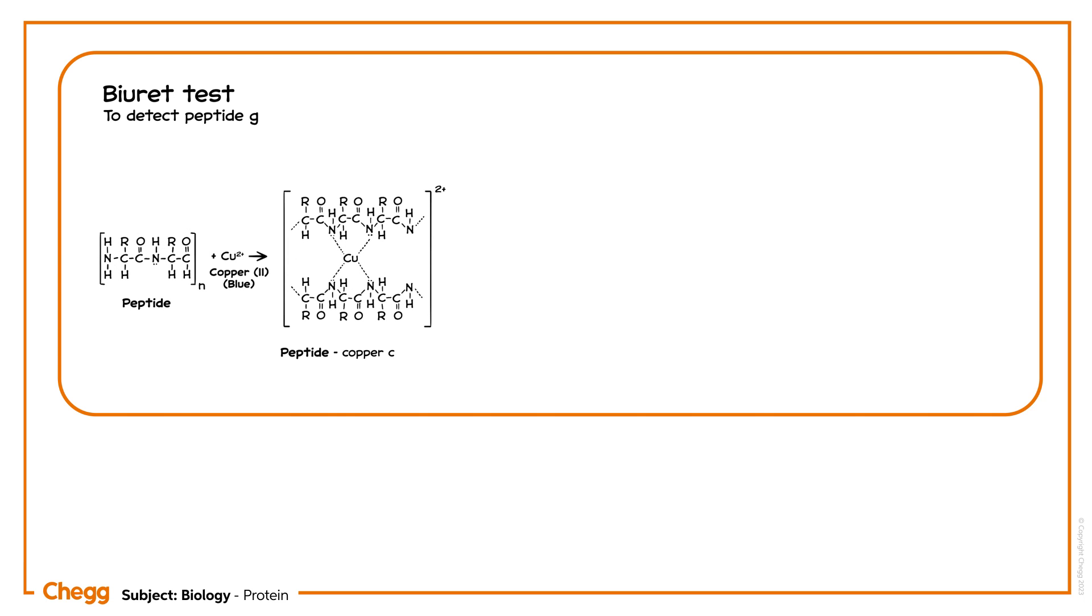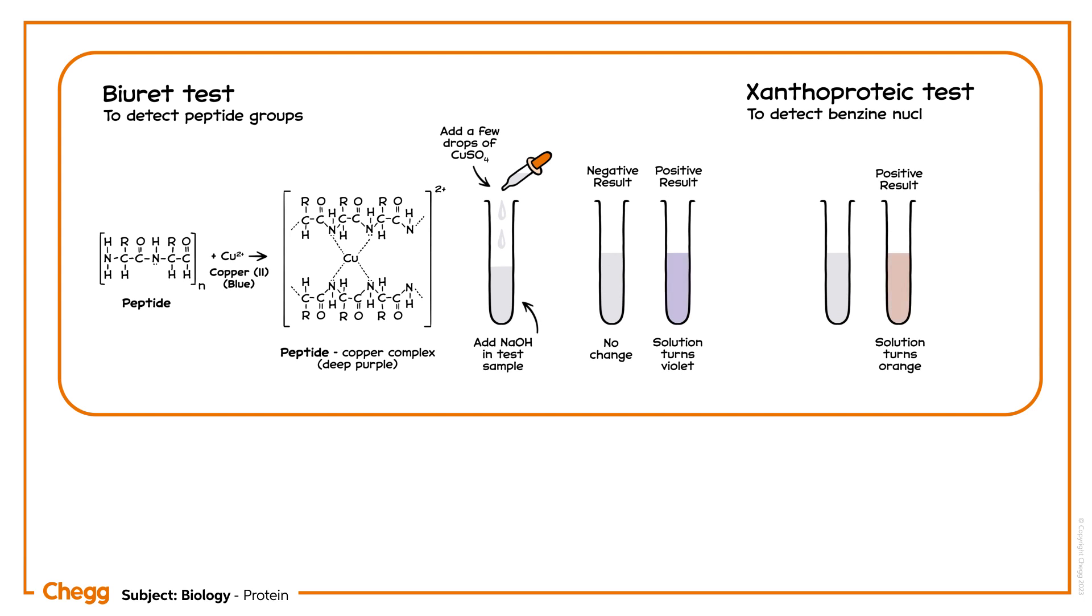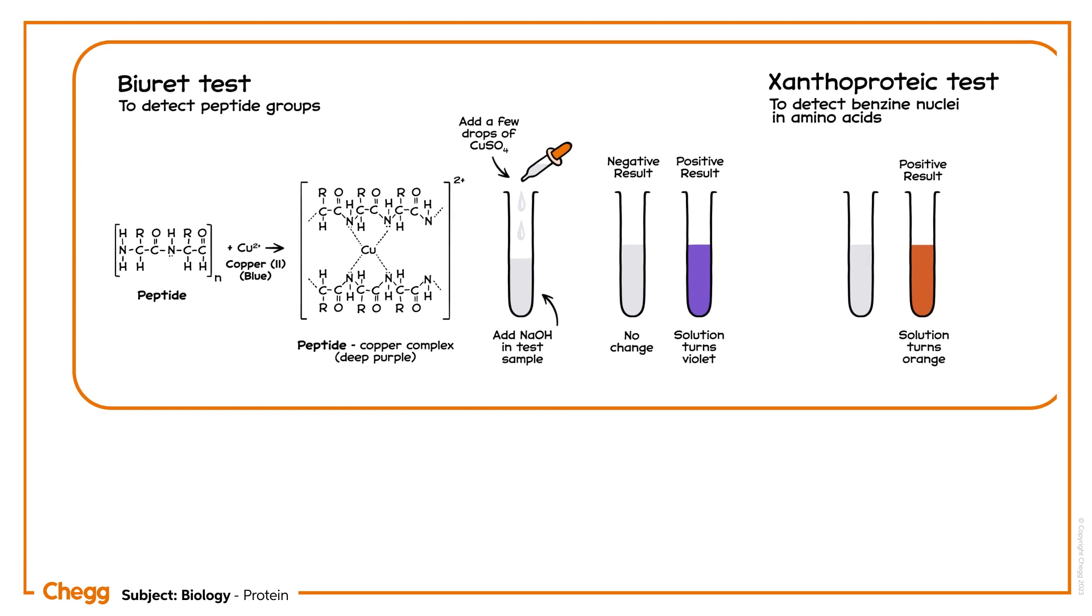To understand their structure better, we can perform a biuret reaction to identify peptide groups and a xanthoproteic test to detect benzene nuclei and amino acid molecules of the protein structure. Moving forward, let us discuss the organisation of proteins.